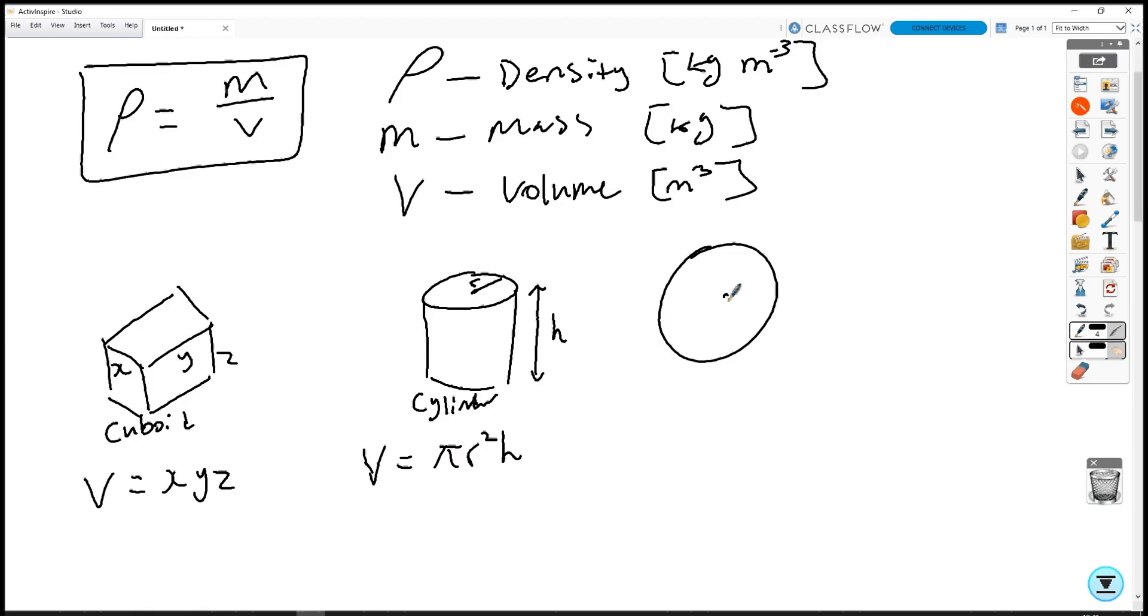If we have a sphere with radius r, then its volume is given by 4 over 3 pi r cubed.